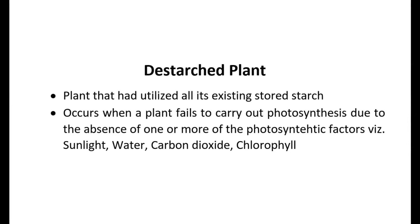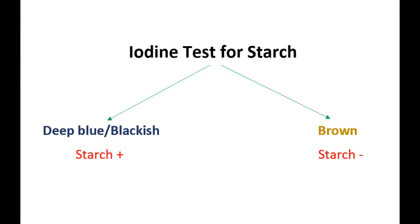A de-starch plant cannot remain alive for long unless it is resupplied with the vital factors necessary for photosynthesis to occur. The absence or presence of starch, and thereby photosynthesis, is determined using iodine solution, which turns blue-black in color in the presence of starch but retains its original brown color in the absence of starch.